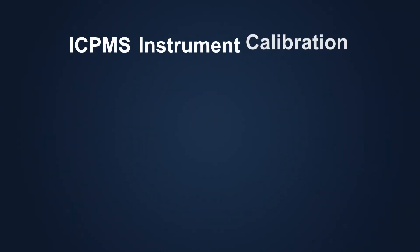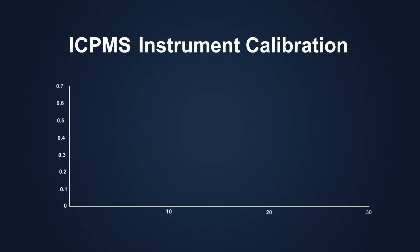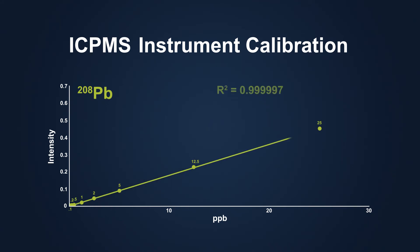Serial dilution of a stock standard automatically creates the ICP-MS instrument calibration for each element, saving the time otherwise required to prepare the calibration curve.